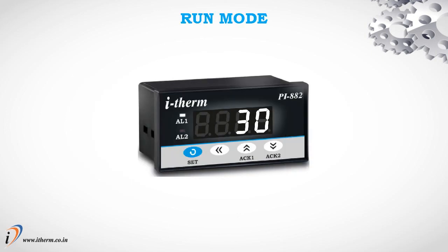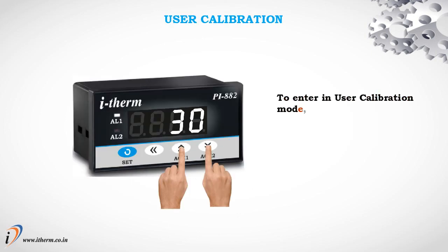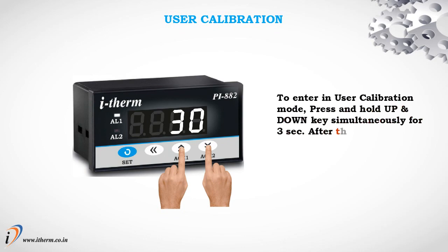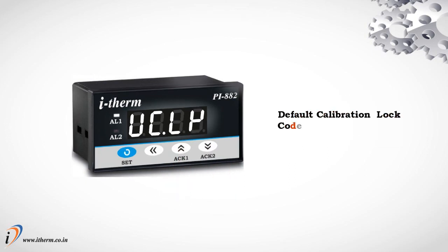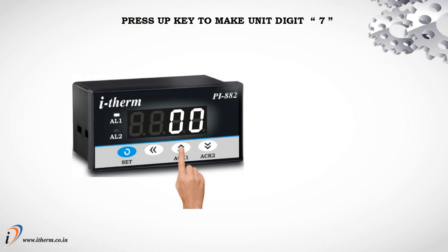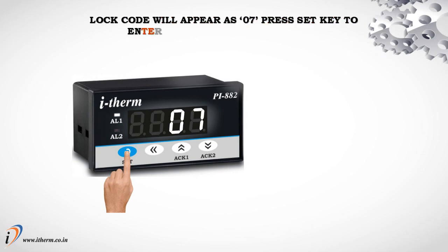Run mode. To enter user calibration mode, press and hold the Up and Down keys simultaneously for 3 seconds. After that, the calibration lock code parameter will appear. Default calibration lock code is 7. Press the Up key to make the unit digit 7. Lock code will appear as 07. Press the Set key to enter the calibration parameters.